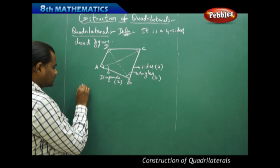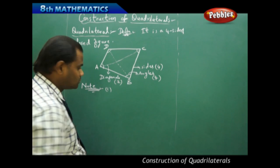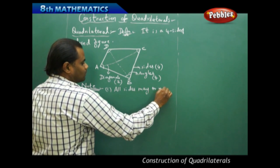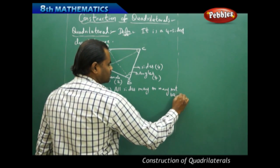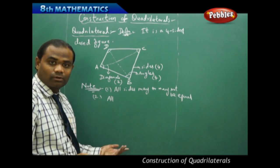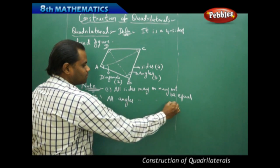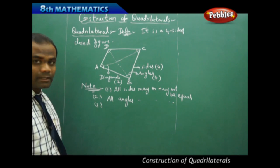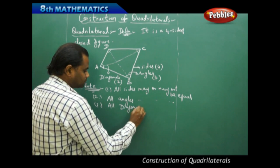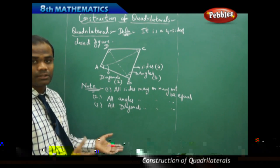One thing to note is that all sides may or may not be equal. That is the first property of a quadrilateral. Similarly, all angles may or may not be equal — it depends on the given conditions. The diagonals also may or may not be equal.